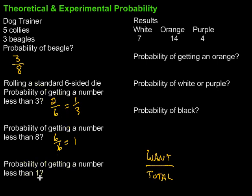This next one: probability of getting a number less than one. How many numbers on a die are less than one? There aren't any. So zero out of six, or zero, tells us that it is impossible to happen. So a couple special cases we might run into: if it's one, that means it's certain to happen. If it's zero, that means it will never happen.